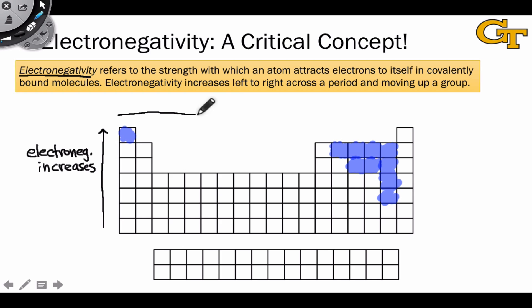Moving left to right across a period on the table, we find that electronegativity also increases. And this has to do with the idea of effective nuclear charge, that as we add protons to the nucleus, the effective nuclear charge increases. And so we increase in electronegativity, since the electrons are feeling a greater positive charge as a result of the greater effective nuclear charge.